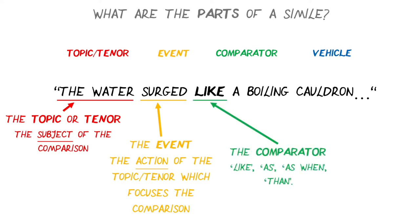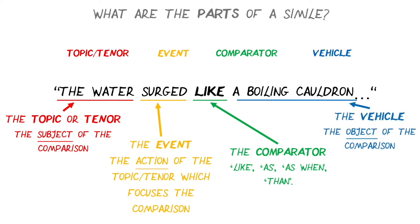Then you have the comparator, which in a simile is 'like', or 'as', or 'as when', or even 'than'. You're comparing something to something else, and that also indicates to the reader or the audience that the vehicle is coming up — the thing that you were comparing the topic or tenor to, the object of the comparison — hopefully something that your audience is going to be able to understand.